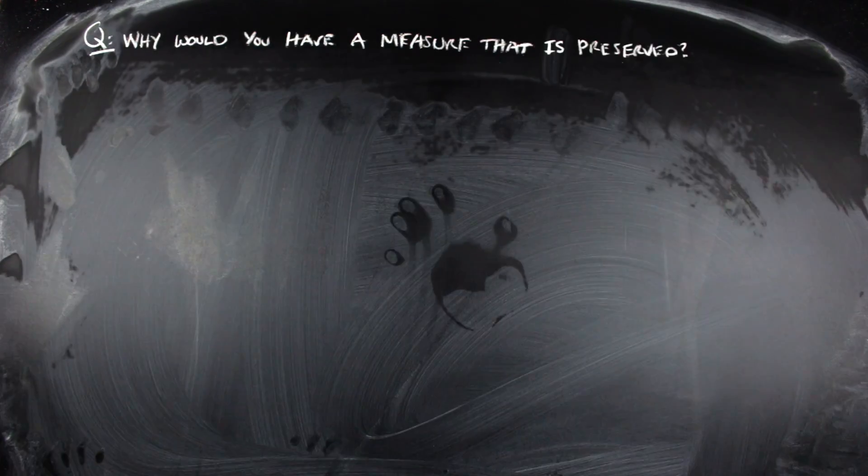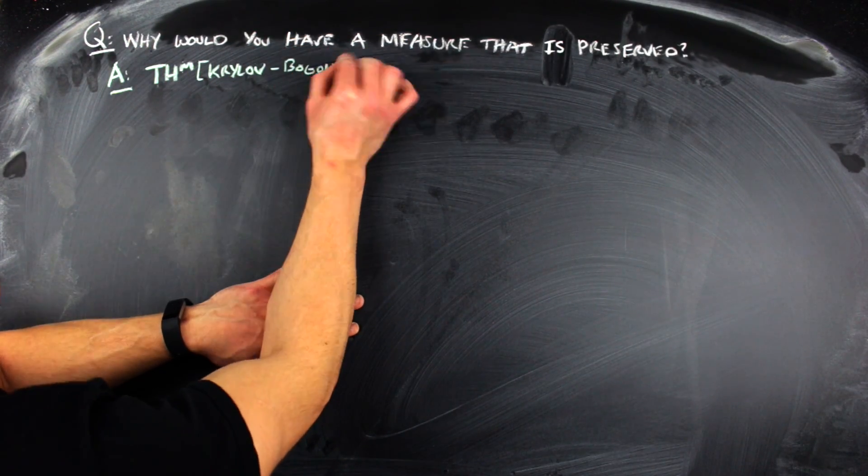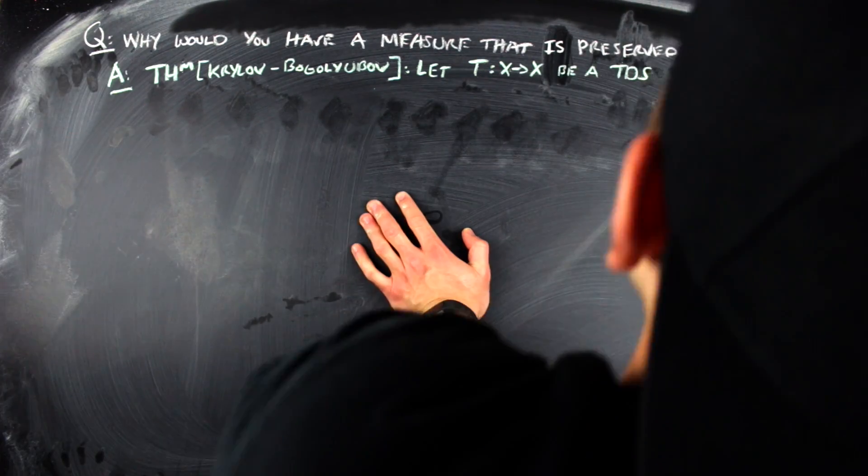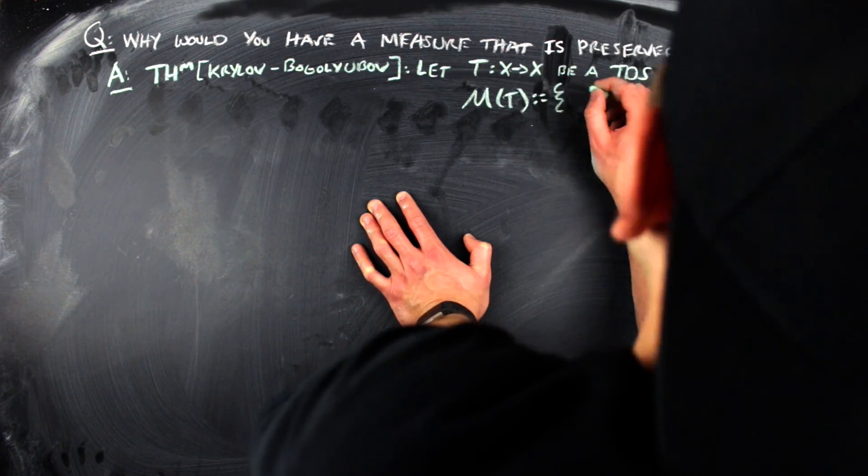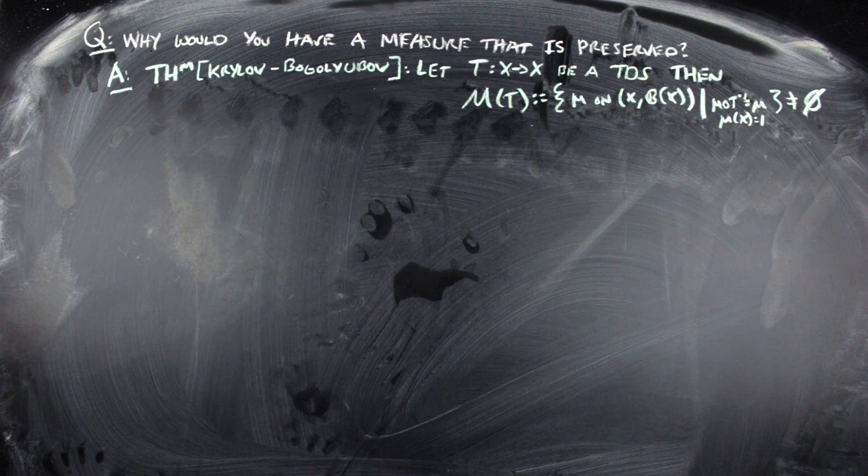The big question is: it works for circle maps, but does it work for all systems? What systems have a measure to think about, and how do you make one of those measures? The answer — why you can do this — is the Krylov-Bogolyubov theorem, which says that for a topological dynamical system T, the set M(T) of all Borel probability measures on X preserved under T is non-empty.